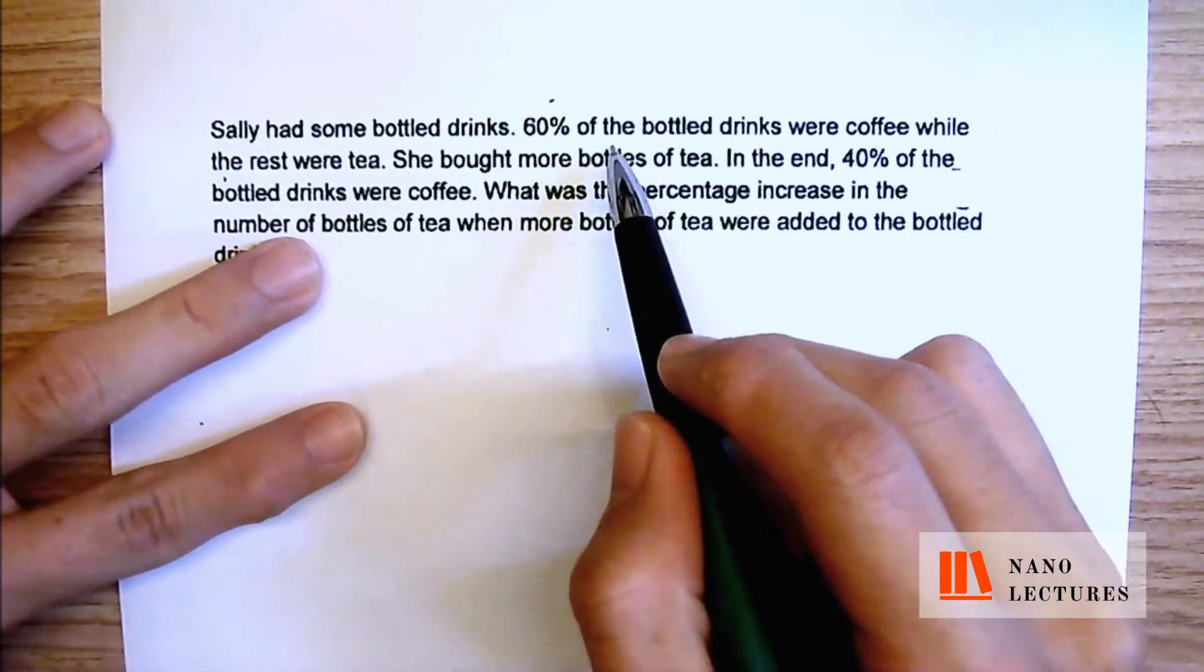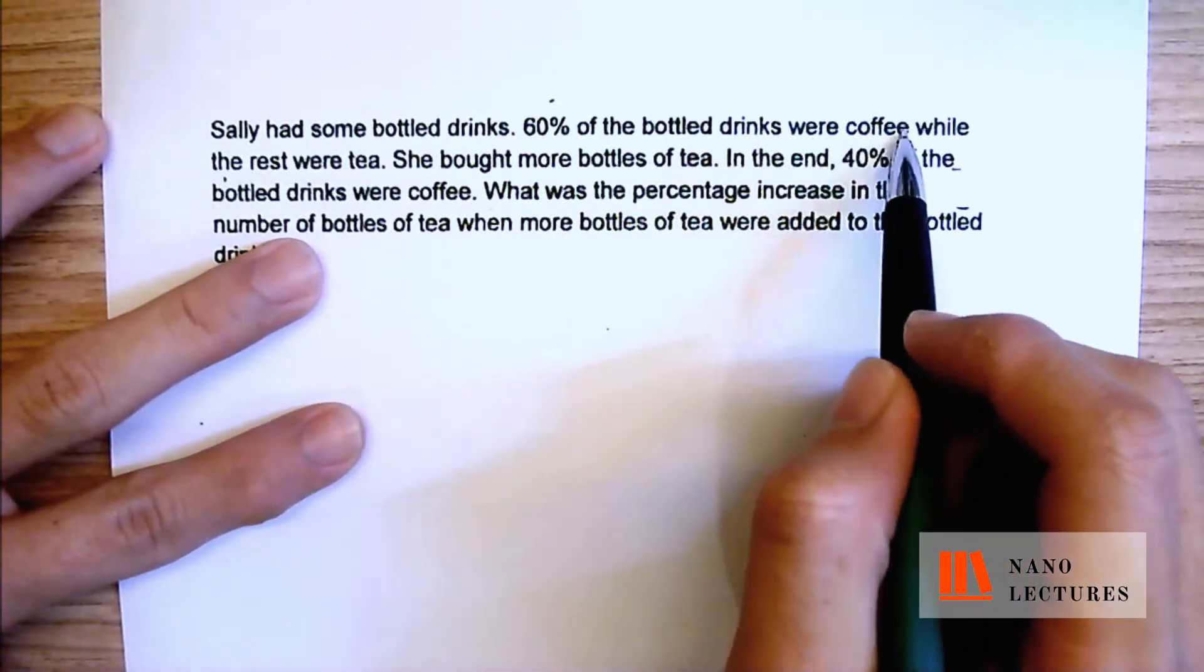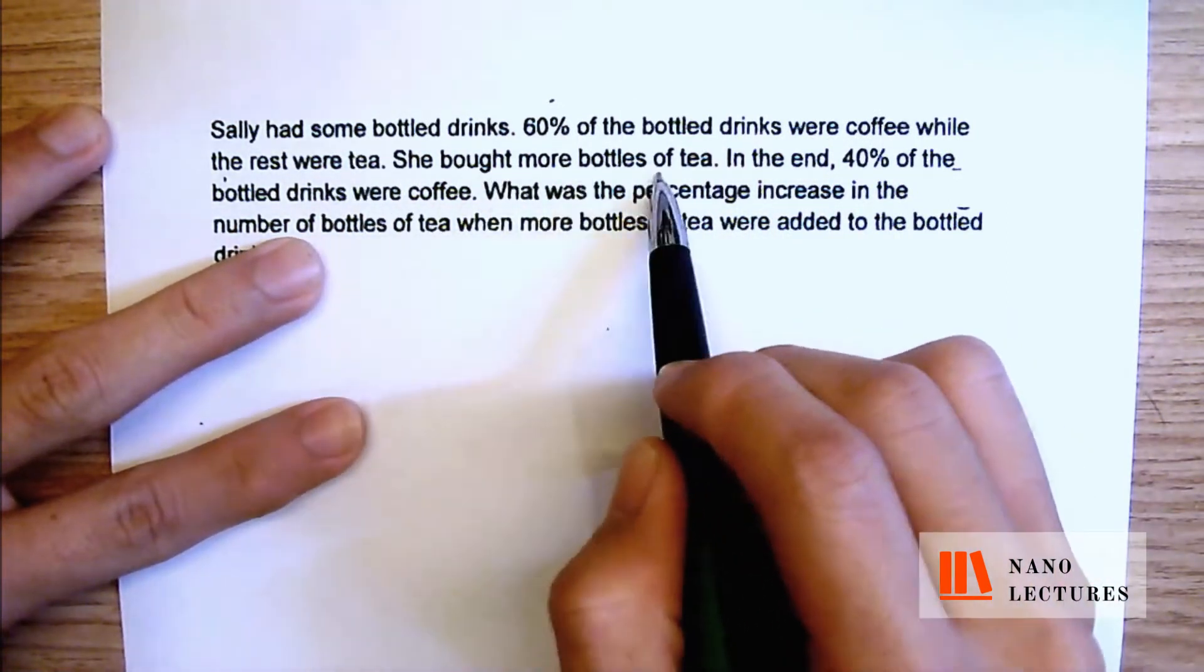Sally had some bottled drinks. 60% of the bottled drinks were coffee while the rest were tea. She bought more bottles of tea.